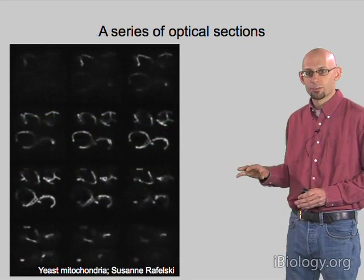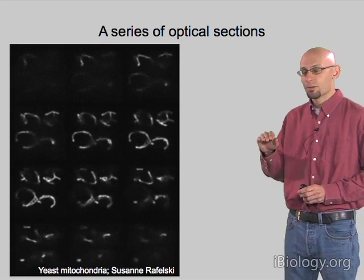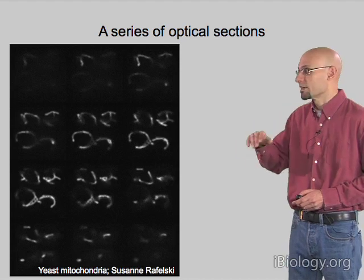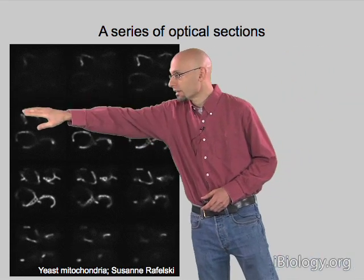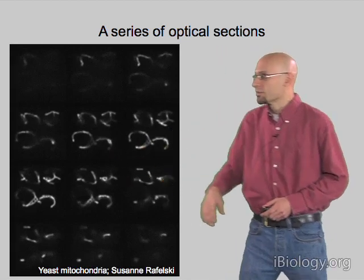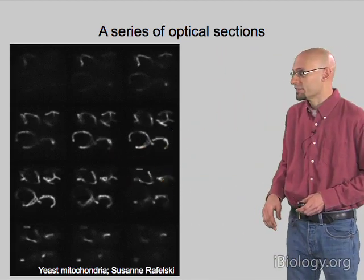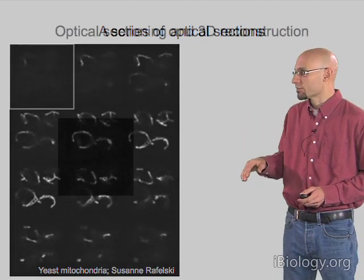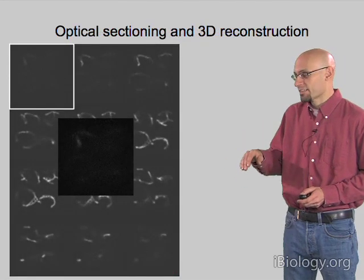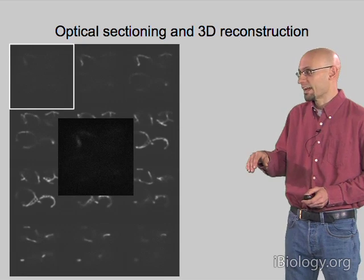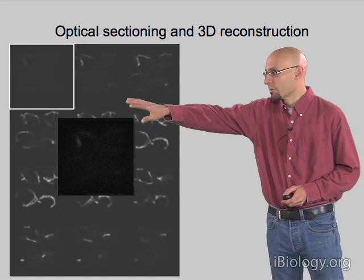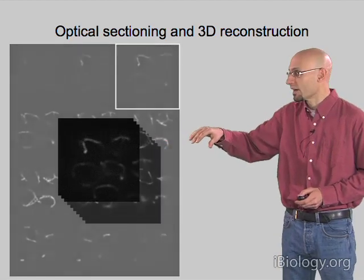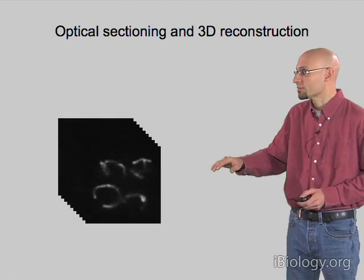In order to build a three-dimensional image, we first take a bunch of images at separate slices through the sample, at different heights. On the left here is a panel showing 12 images taken at different heights through a yeast cell. We have this set of two-dimensional images, and what we can do is stack them up into a three-dimensional stack — what we call a Z-stack. I'm taking the bottom image, then the next image, putting that on top, and so on.